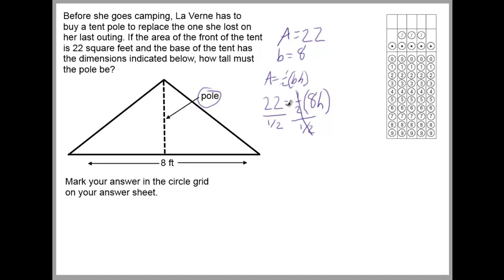So 22 divided by half — since you can use your calculator on this part of the test — you could convert one half to 0.5 and divide 22 by 0.5. Or you could think about it differently: dividing by one half is the same thing as multiplying by two. So to save time, you could just multiply 22 by two — just like dividing by one third is the same as multiplying by three, or dividing by one tenth is the same as multiplying by ten. So 22 times 2 is 44, equals 8H.